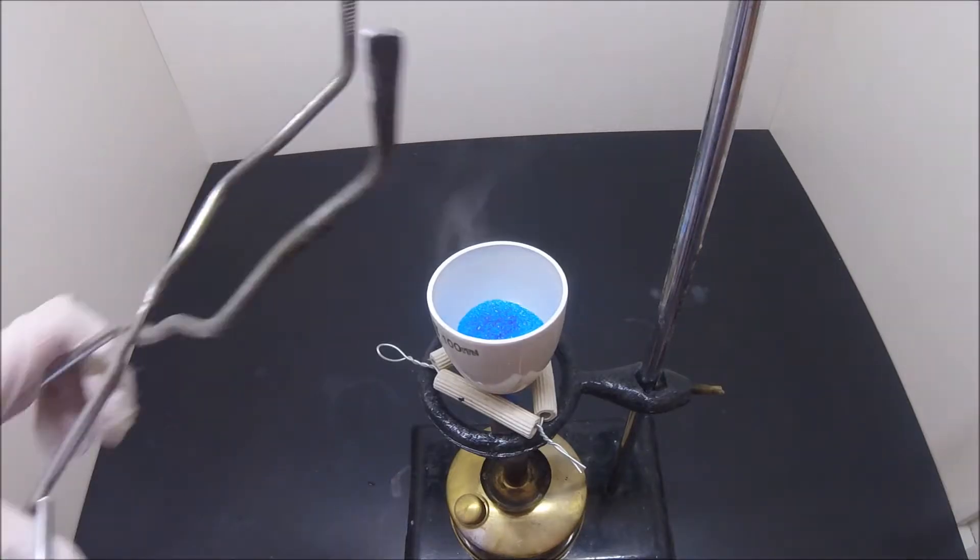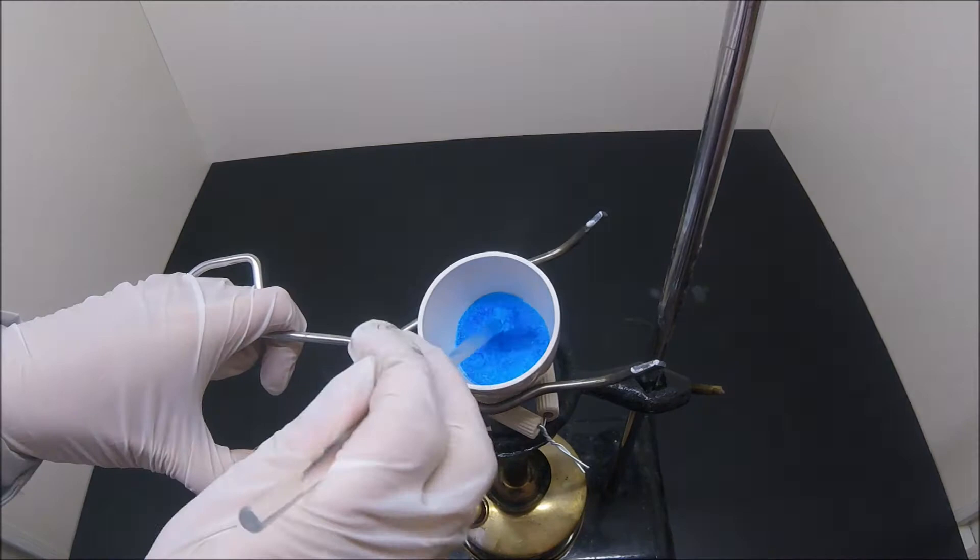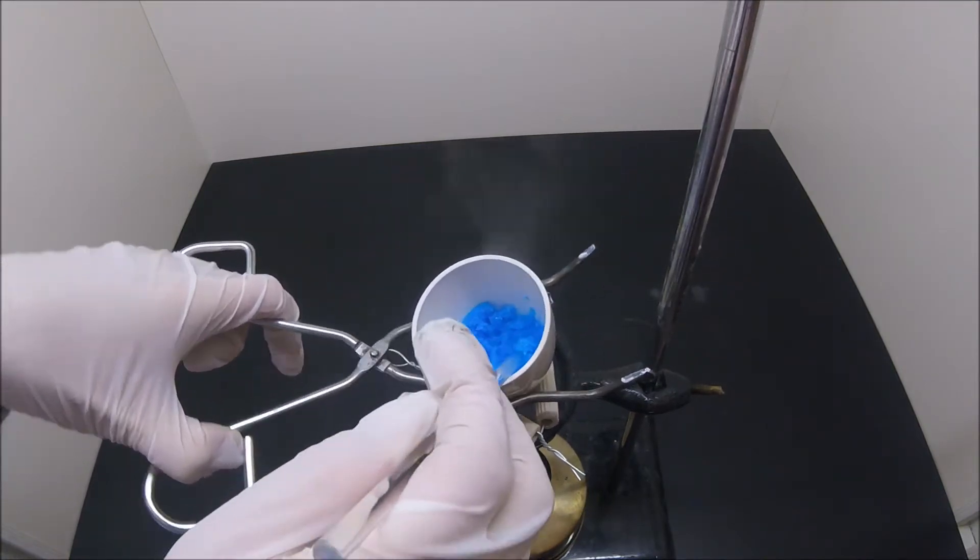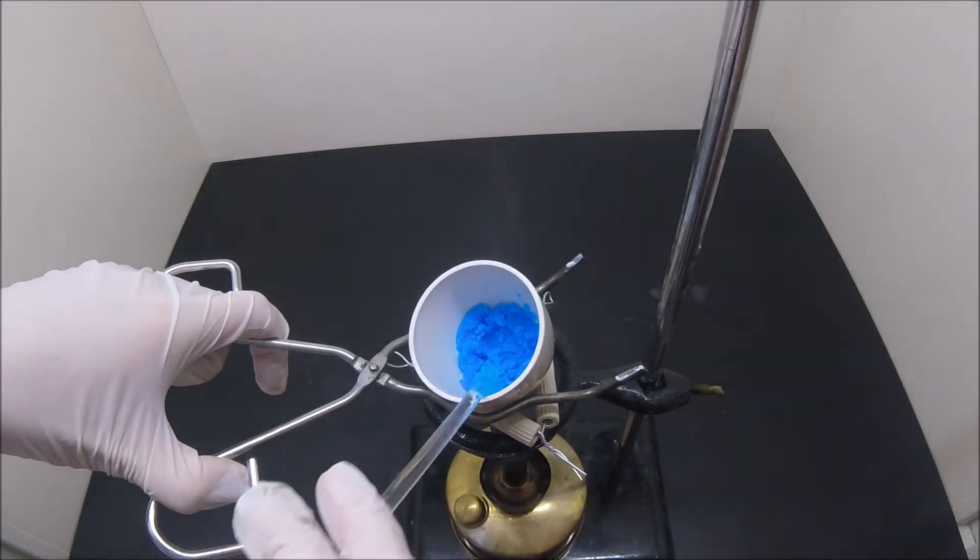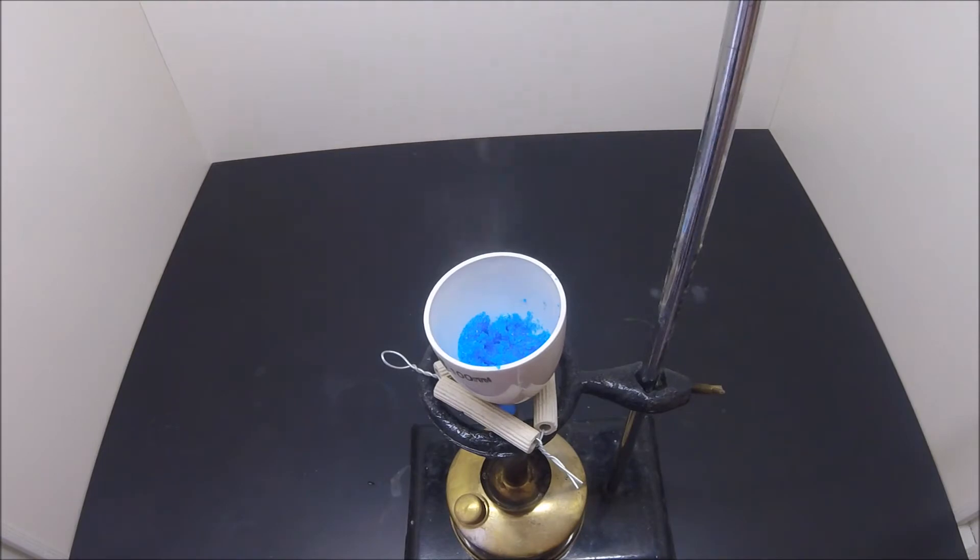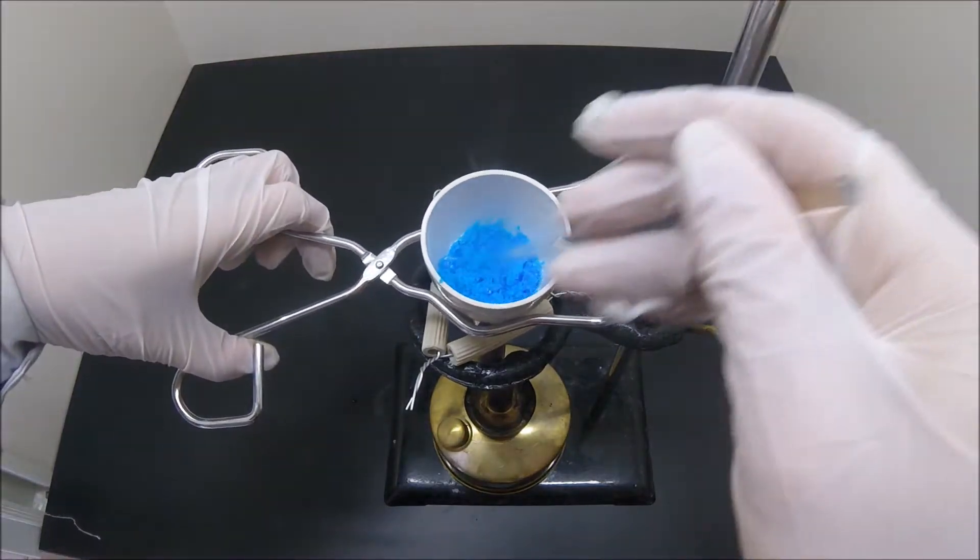The crucible is placed on an alcohol torch with occasional stirring to allow the moisture to escape. I find this type of alcohol torch especially interesting. I might make another video explaining how it works, but for now let's just focus on what we are doing right now.